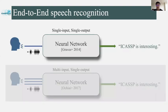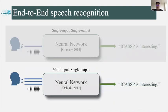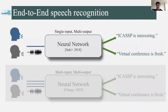Let's talk about the development of end-to-end speech recognition. As a beginning step, the end-to-end speech recognition model takes a single-channel speech as input and outputs a single sequence of recognized text. Later, an end-to-end model was proposed to handle the multi-channel input, but the output is still a single sequence. In the recent one or two years, some researchers proposed to use end-to-end models in overlapped speech, so the outputs are multiple sequences of text, one sequence for each speaker.